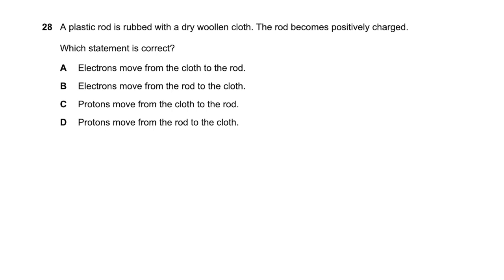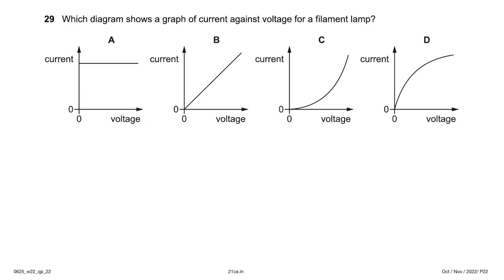A plastic rod is rubbed with a dry woolen cloth and becomes positively charged. This means electrons have moved from the rod to the cloth. Options C and D involve protons, which don't move. Option A is also wrong. The correct statement is that electrons moved from the rod to the cloth. Answer: option B.